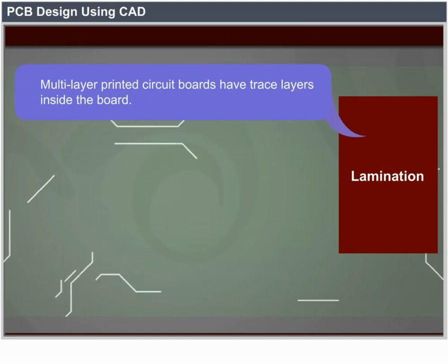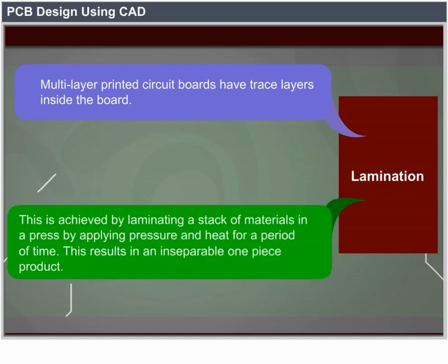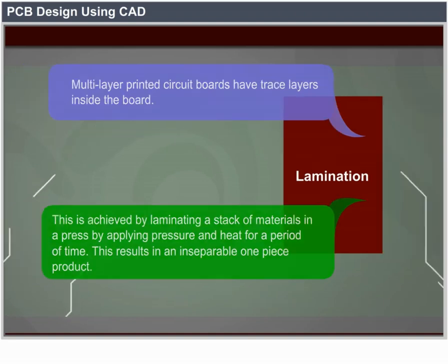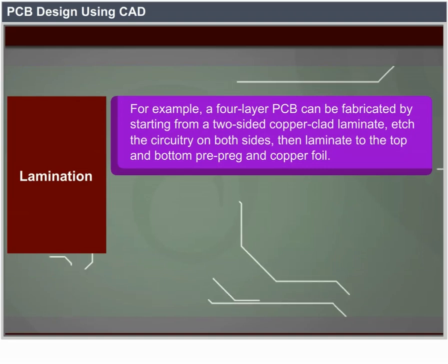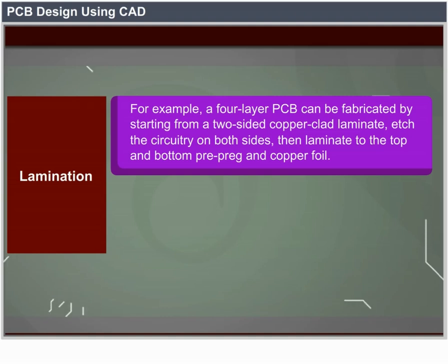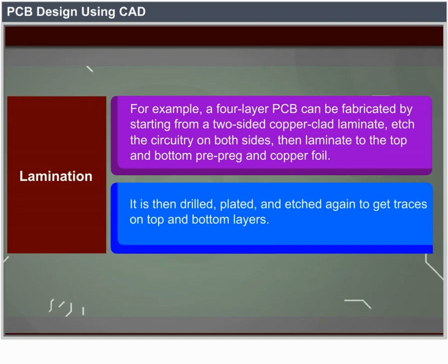Lamination: multi-layer printed circuit boards have trace layers inside the board. This is achieved by laminating a stack of materials in a press by applying pressure and heat for a period, resulting in an inseparable one-piece product. For example, a four-layer PCB can be fabricated by starting from a two-sided copper clad laminate, etching the circuitry on both sides, then laminating to the top and bottom with pre-preg and copper foil. It is then drilled, plated, and etched again to get traces on top and bottom layers.